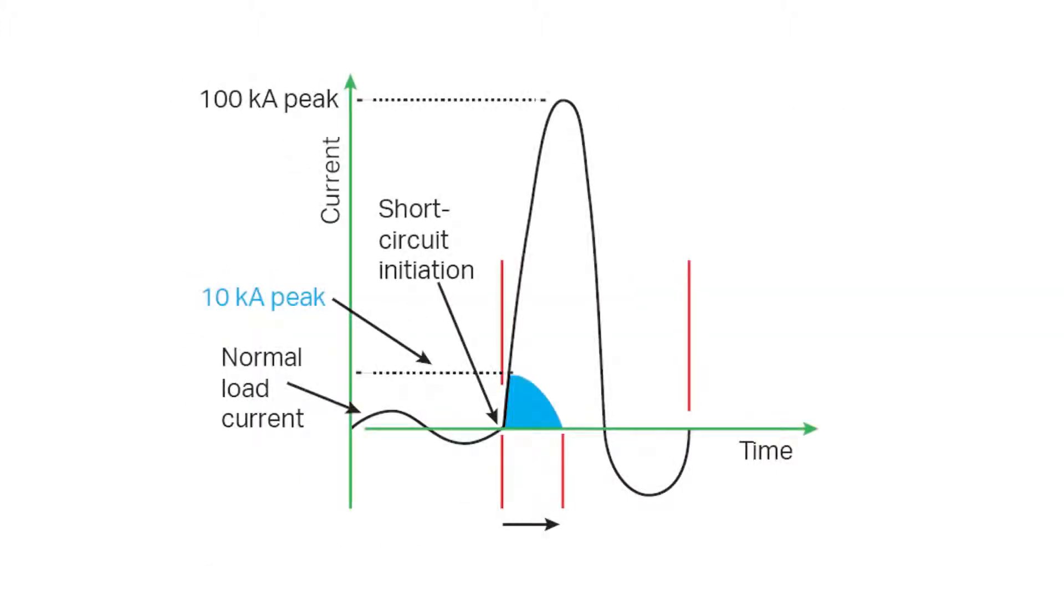This waveform demonstrates this same short circuit when the fuse operates within its current limiting range. A current limiting fuse has such a fast response speed that it cuts off the current long before it can build up to its full peak value.